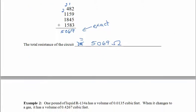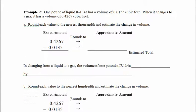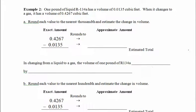Okay, let's try one with decimals. Flipping to the next page. So here we have one pound of liquid R134a, which of course is a type of refrigerant. And this has a volume of 0.0135 cubic feet. Real quickly, let's practice reading this decimal properly. This would be the tenths place, the hundredths place, the thousandths place, and the ten-thousandths place. So we could say 135 ten-thousandths of a cubic foot, or just 135 ten-thousandths cubic feet. When this refrigerant changes to a gas, it now has a volume of 0.4267, 4267 ten-thousandths. Okay, so here we go. Our first job is to round each value to the nearest thousandth, to estimate the change in volume.